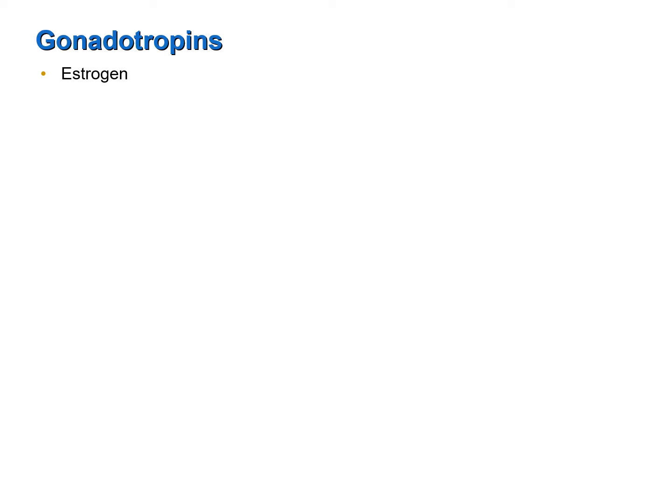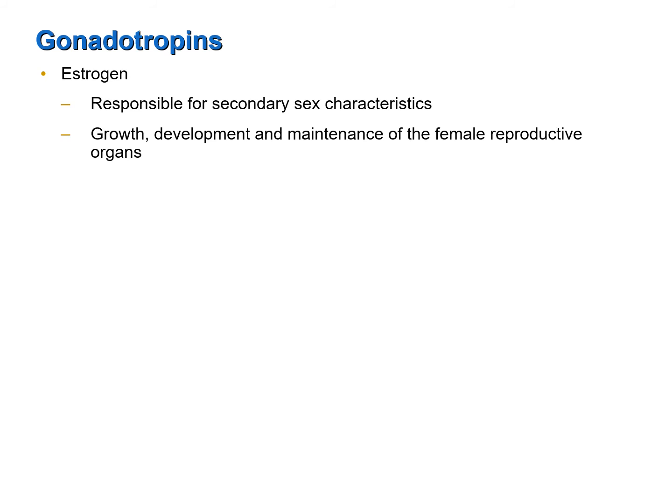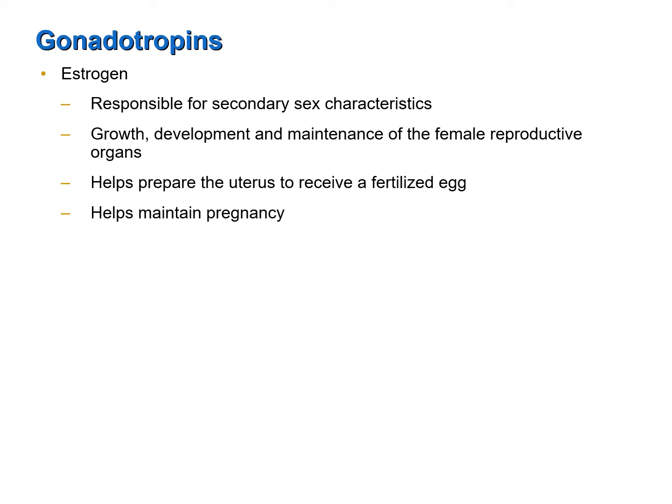Estrogen, which is produced by the maturing follicles under the stimulation of follicle stimulating hormone, has several functions. It is responsible for the expression of secondary sex characteristics, such as growth of hair in the pubic region and in the armpits, as well as the deposition of fat on various parts of the body such as the hips. Estrogen is also responsible for proper growth, development, and maintenance of female reproductive organs. It helps prepare the uterus to receive a fertilized egg, and once a fertilized egg implants into the walls of the uterus, estrogen helps maintain pregnancy. Estrogen also helps prepare the breast to produce milk.